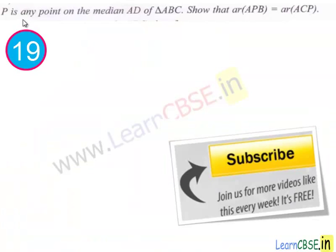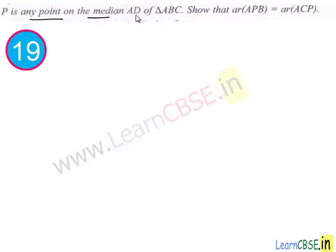Let's move to the next question. In this question, P is any point on the median AD of triangle ABC. We have to show that area of triangle APB is equal to area of triangle ACP.